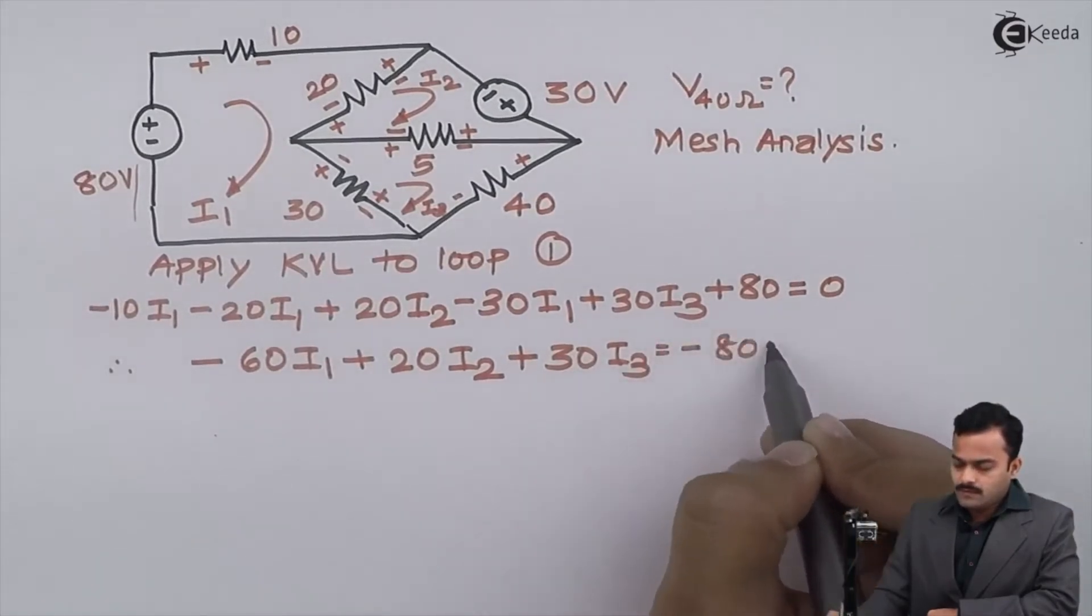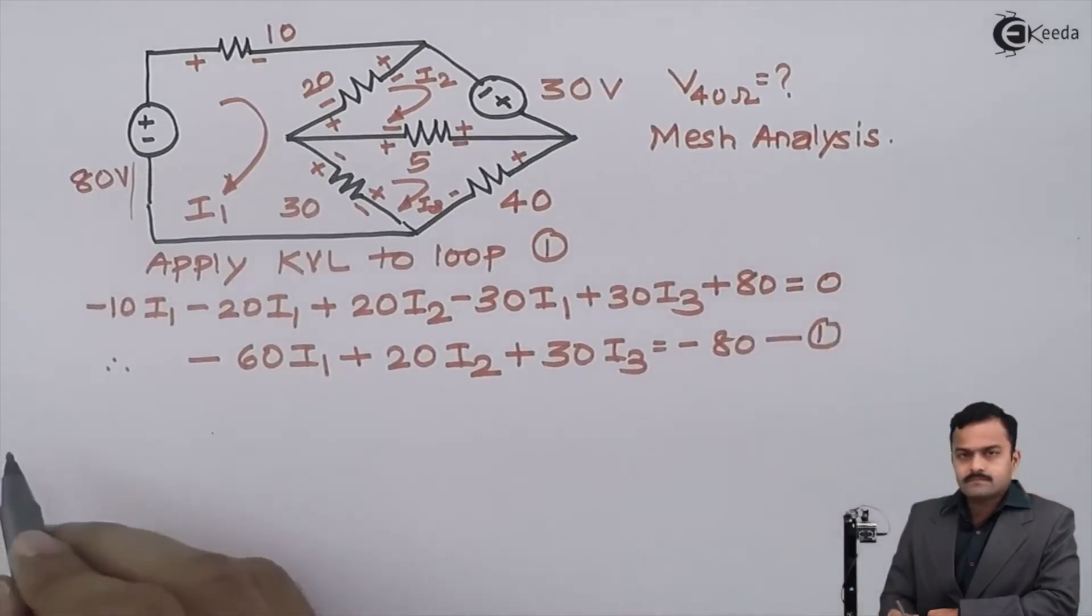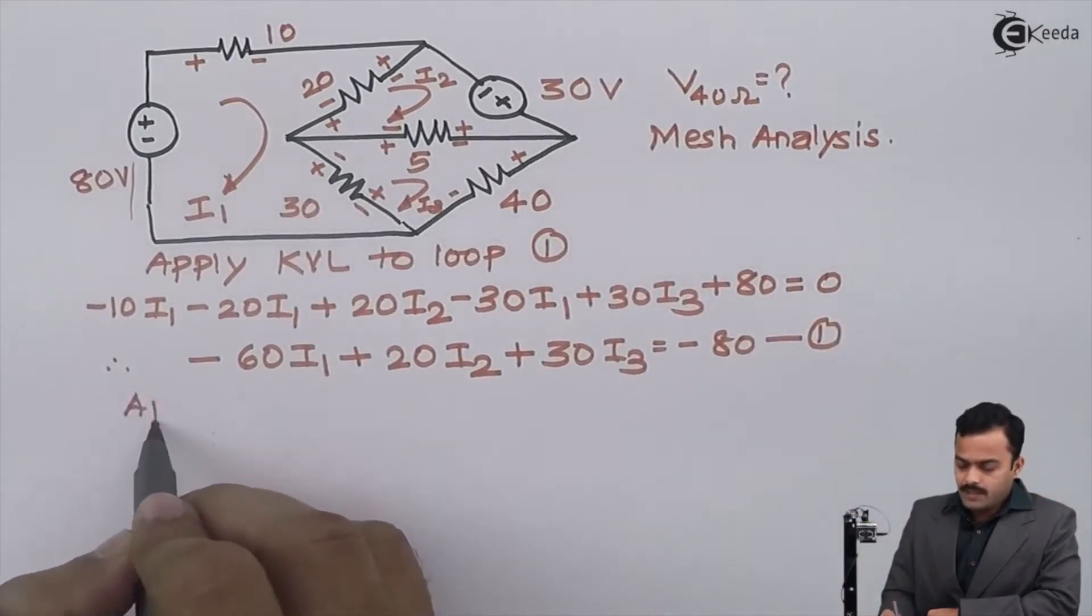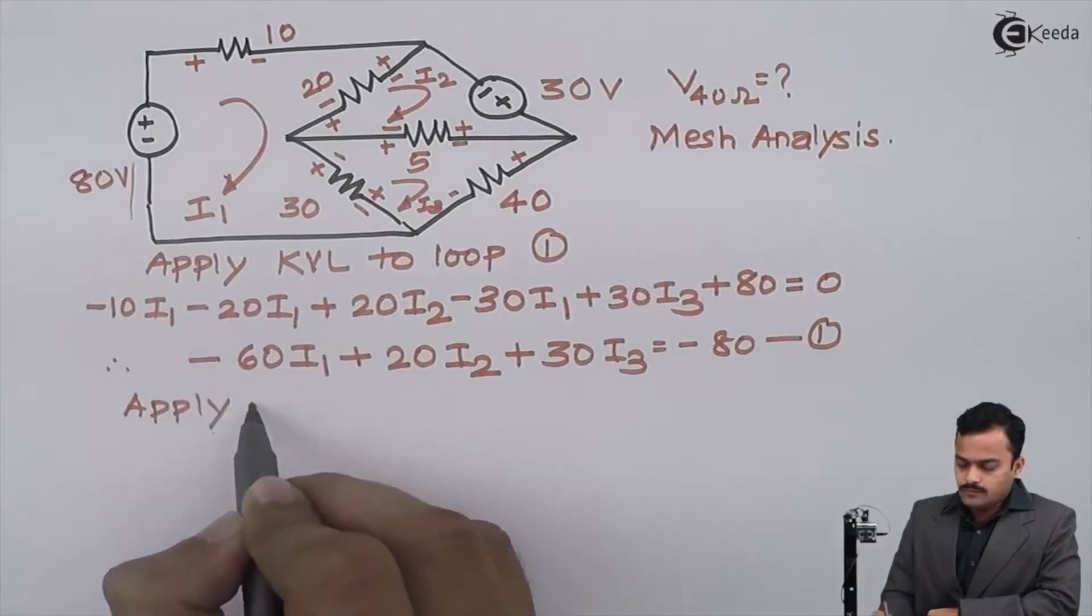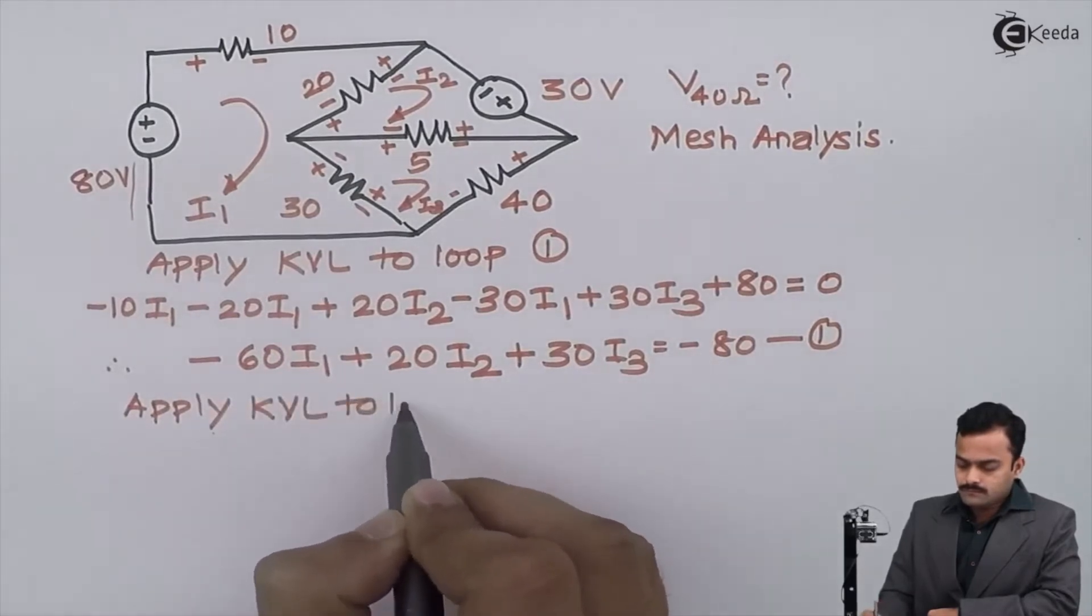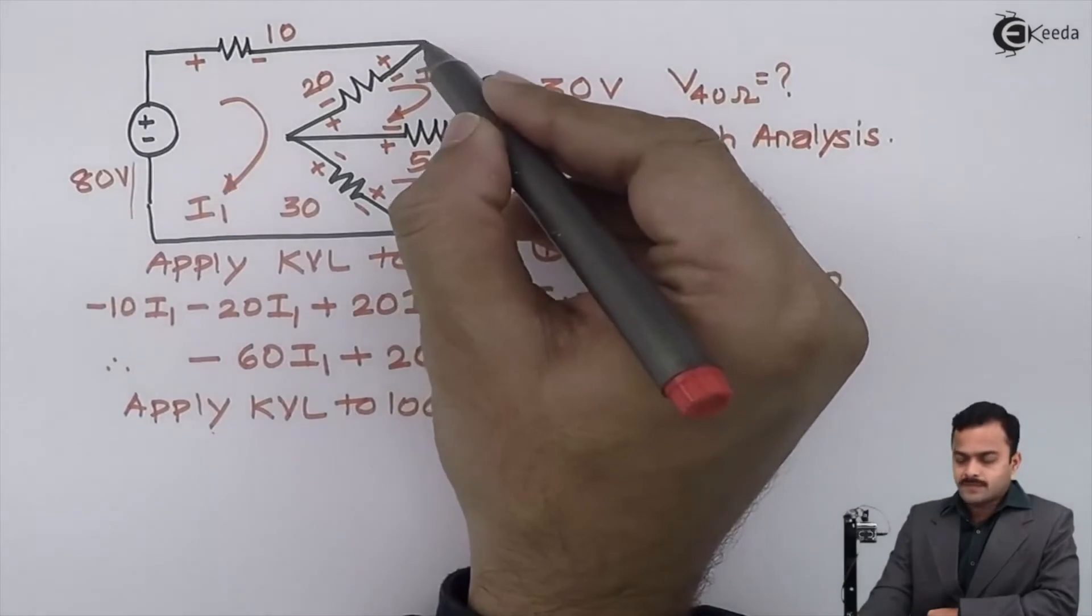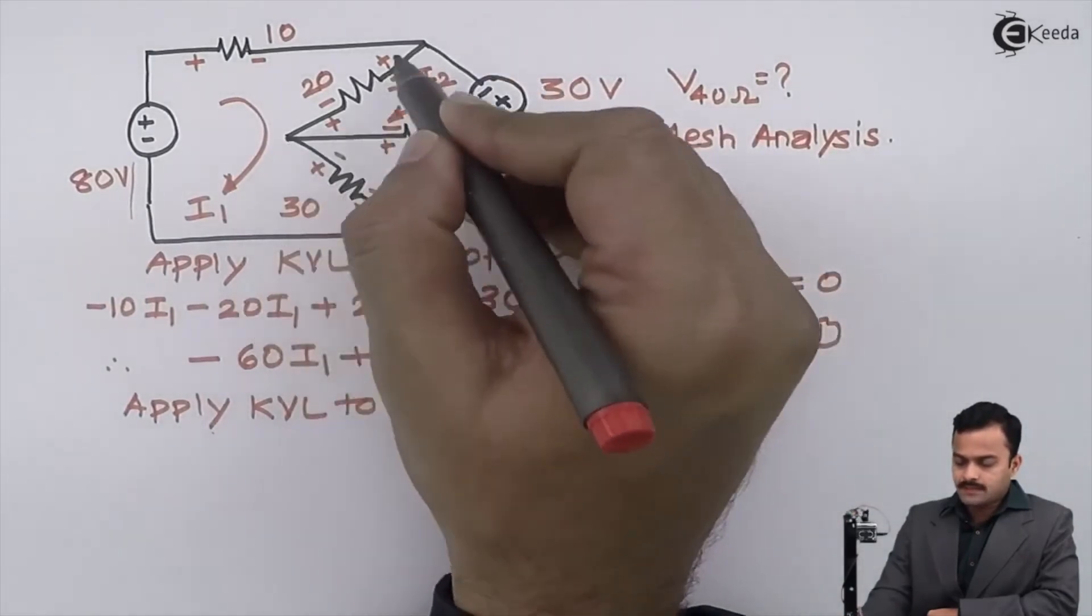Similarly, I can apply KVL to loop number two. I will start from this point and trace a path like this.